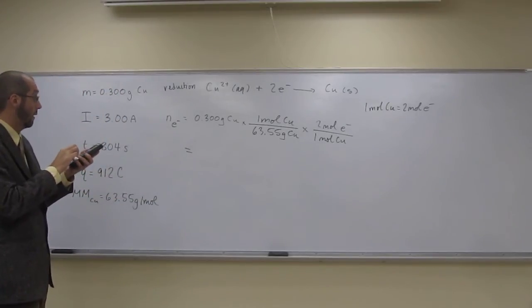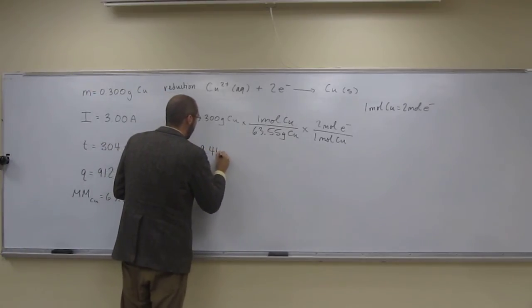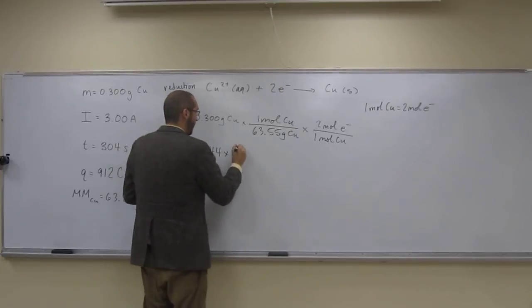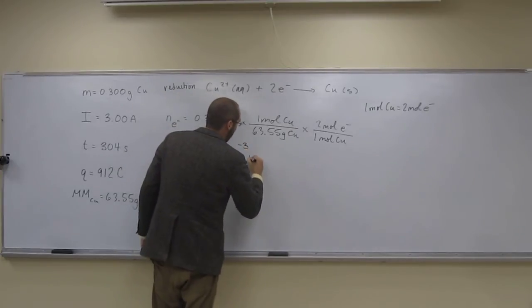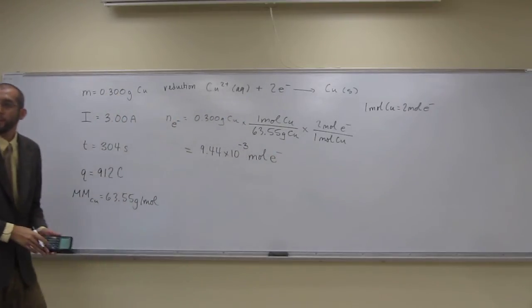So 0.3 divided by 63.55 times 2. And I get 9.44 times 10 to the negative 3 moles of electrons. Like that.